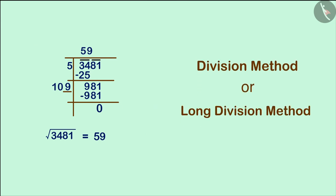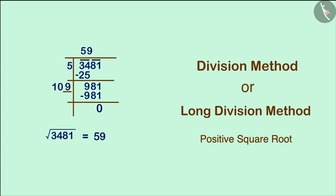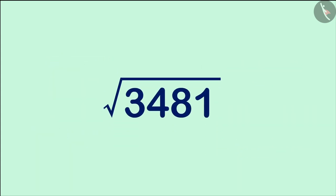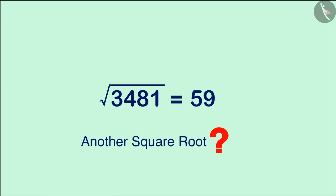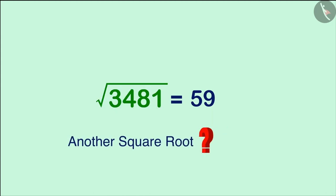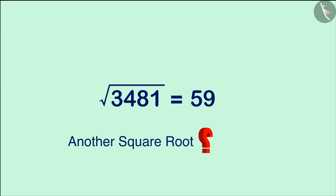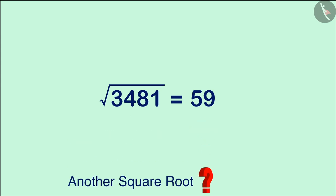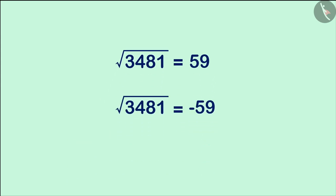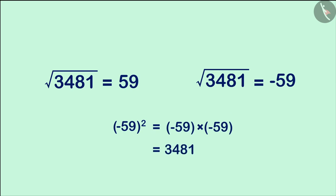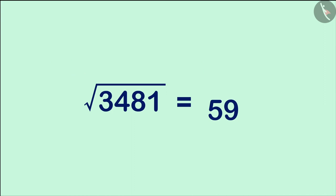This method of finding the square root is called the long division method. By this method, we find the positive square root of a number. The positive square root of this number is 59. Can you give another square root of this number? It will be minus 59, because the square of minus 59 is also 3481.